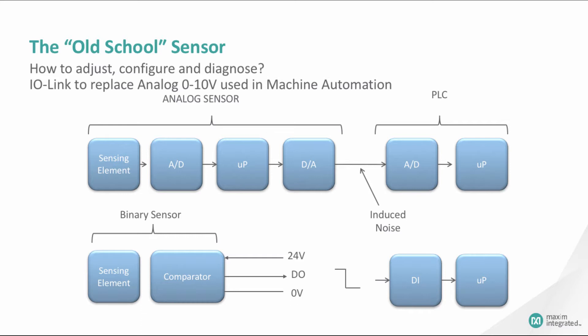As technology advanced, sensor manufacturers found they could integrate more functionality into their sensors, eliminating some of these problems. Binary sensors were created, defined and standardized in IEC 60947-5-2. The standard defines binary sensors as a sensing element — for example, inductive, capacitive, ultrasonic, photoelectric, etc. — with a semiconductor switching element. Per the standard, switching elements can be defined as normally open, normally closed, changeover, or user programmable.